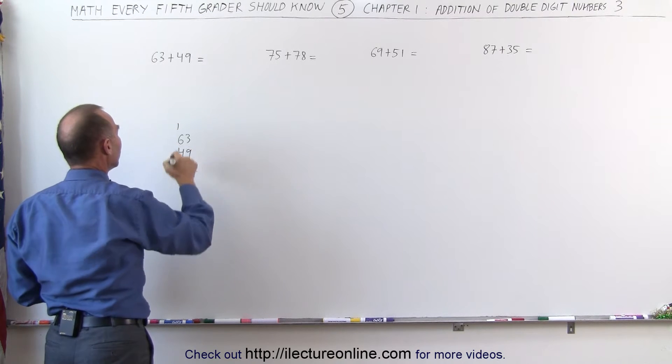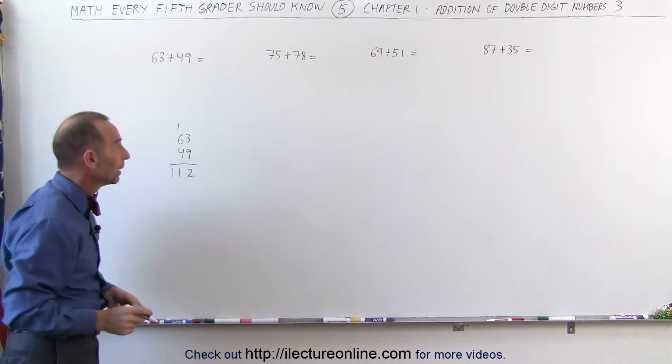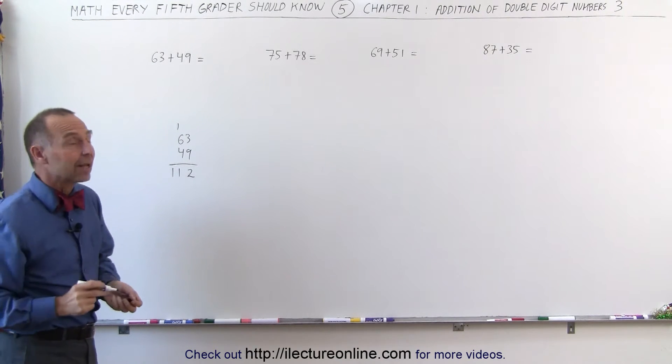I write down the 2. I remember 1. 6 plus 4 is 10 plus 1 is 11. And there's my number. There's my solution. And that's great, but you have to write it down on a piece of paper.